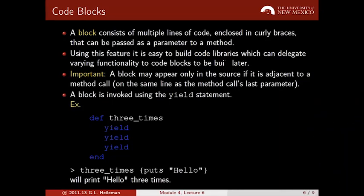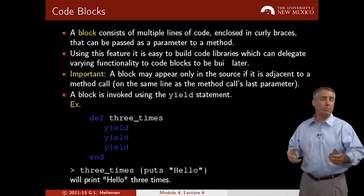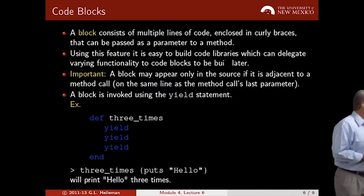Here's an example. I'm creating a function called three_times, and it's got three yield statements in it. The yield statement will just execute the block of code that's passed into that method. If you open up IRB, first define this function. Then I'm invoking that method three_times, and right after it, curly braces. That's a block of code that's being passed in to the method. That block of code just says puts hello, in other words, print string hello. Because there's three yield statements inside the method three_times, it's going to execute that block of code three times. If you execute this, it's going to print hello three times from the IRB console.